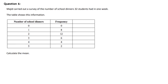Okay, so for question six we are told Madge has carried out a survey of the number of school dinners 32 students had in one week and the table shows the information. We want to find the mean.